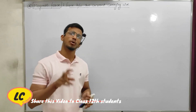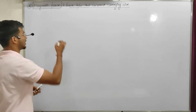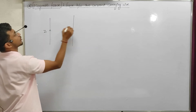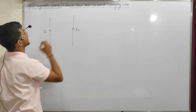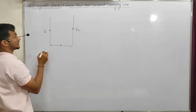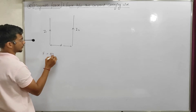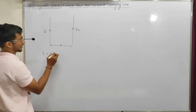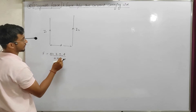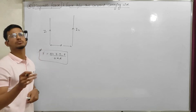In the last video, I told you how much force will be between two current-carrying parallel wires. The formula was given: you have two wires with currents i1 and i2, and the distance between them is d. In the same direction there will be attraction, in opposite directions there will be repulsion. The force formula was μ₀·i1·i2 upon 2πd.